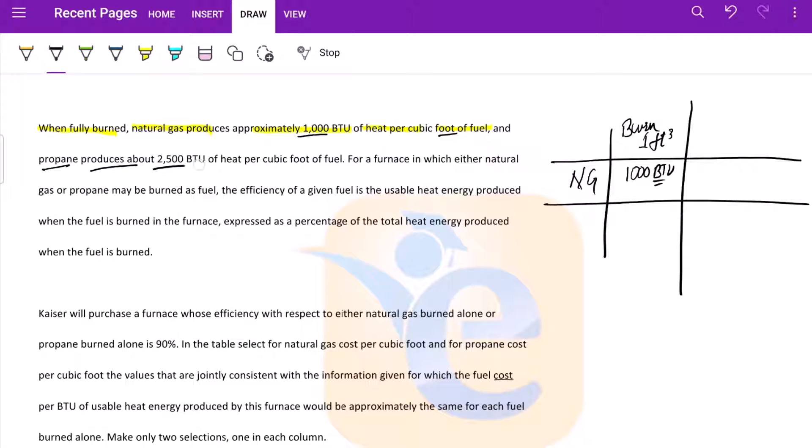And propane produces 2500 BTU. We have natural gas, we have propane, and it is 2500 BTU.